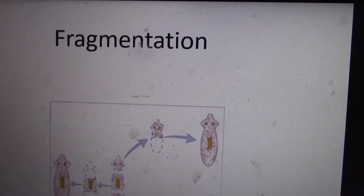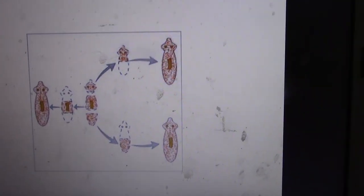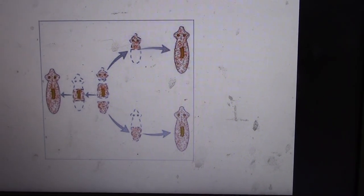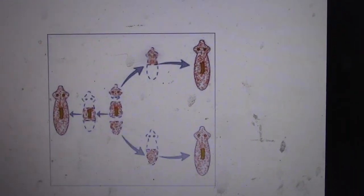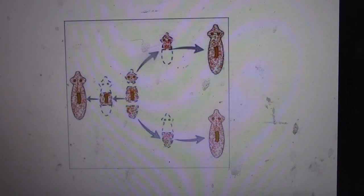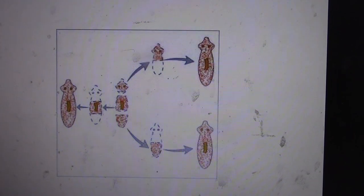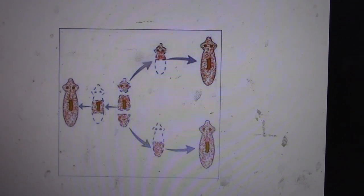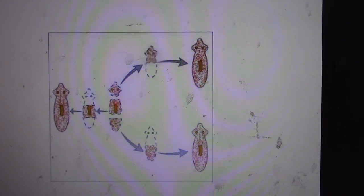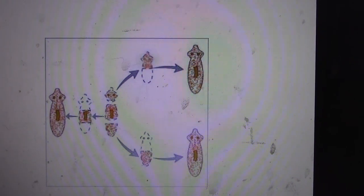This is fragmentation. This is kind of freaky. So this is a flatworm. Remember that worms are segmented. So they have different, so annelids, or annelida, that's the genus. Annelida has separate parts. So all these worms have different segments.